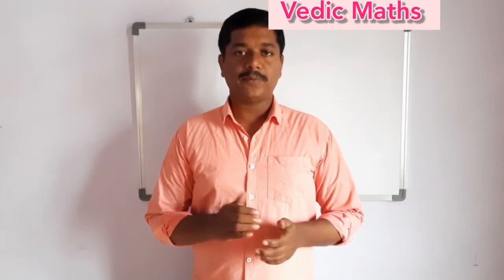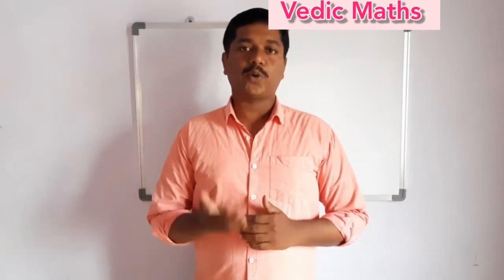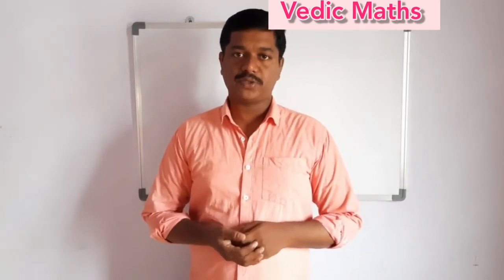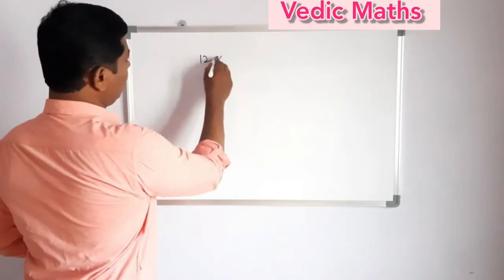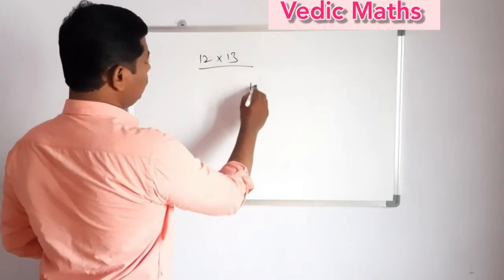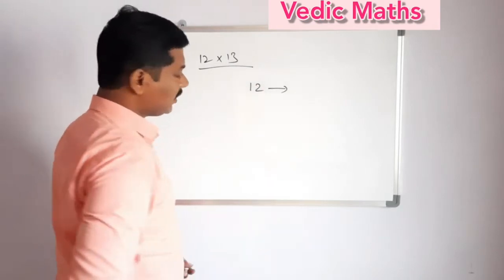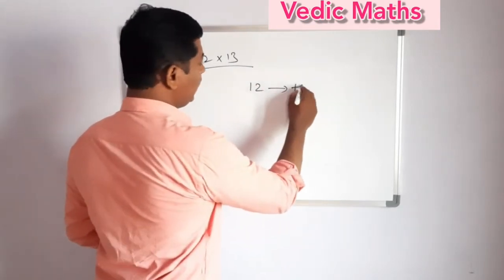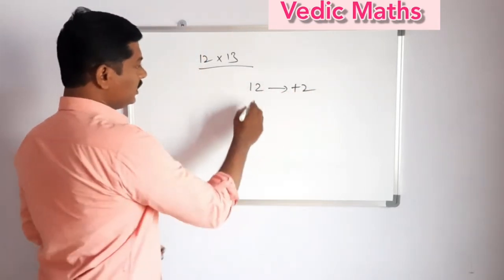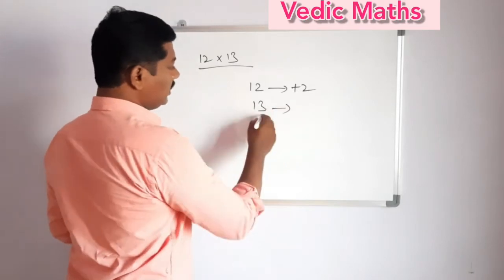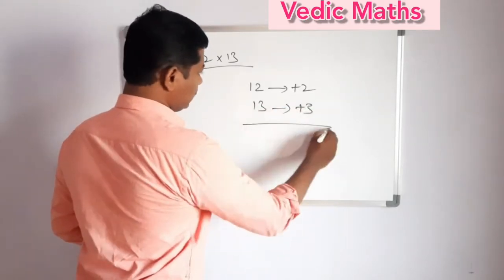For example, 12, 13. So 12, 10 plus 2. So 10 plus 2, and 13, this is 10 plus 3, plus 3.